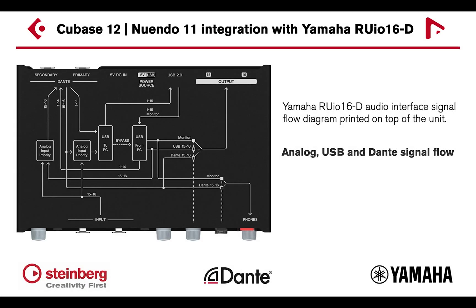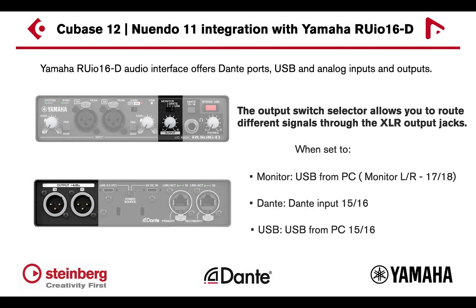A diagram for the analog, USB, and Dante signal flow is printed on top of the interface for reference. The output switch selector in front of the unit allows you to route different signals to the XLR output jacks.